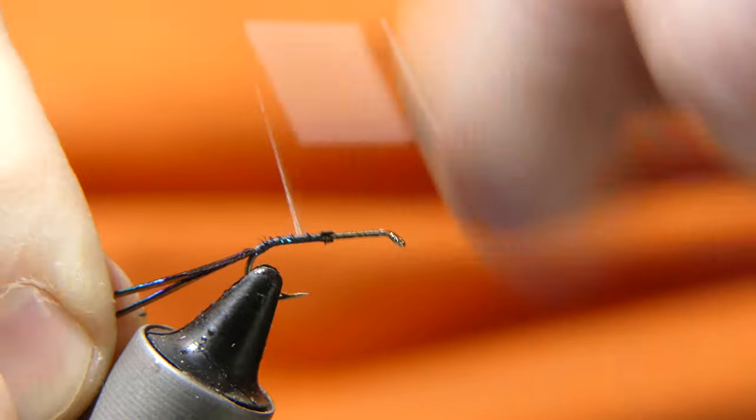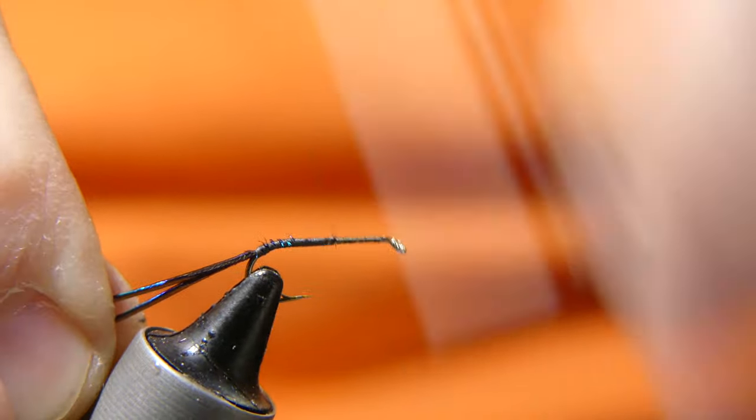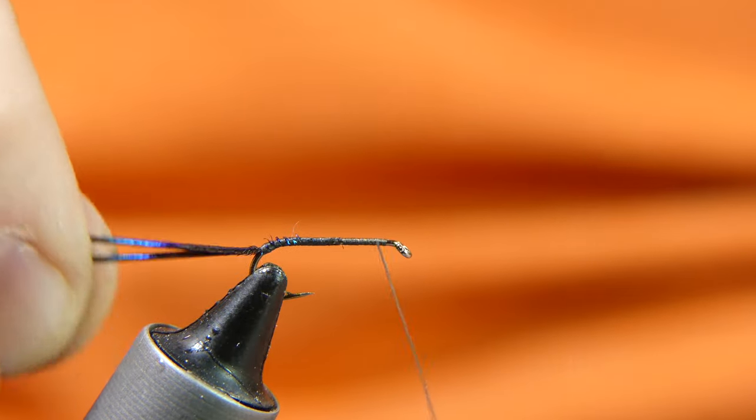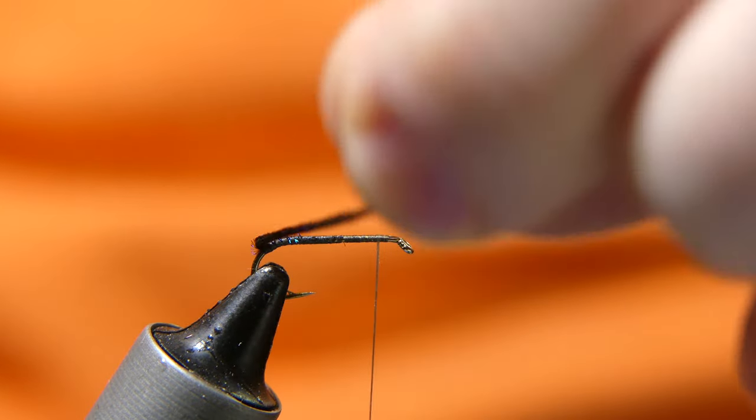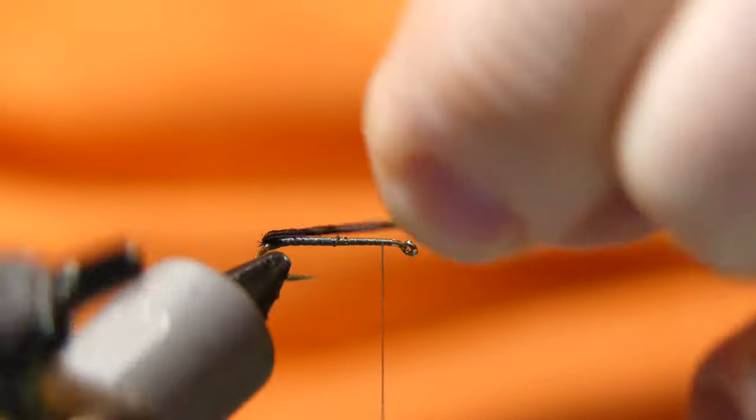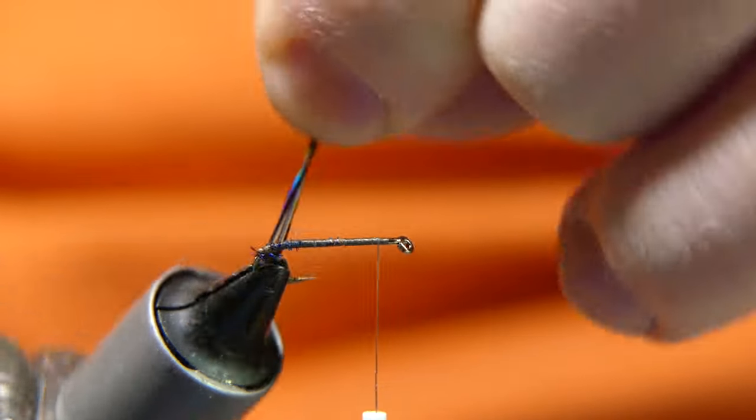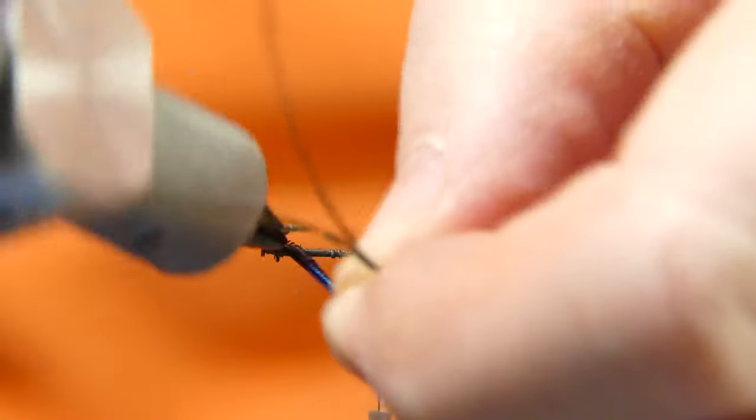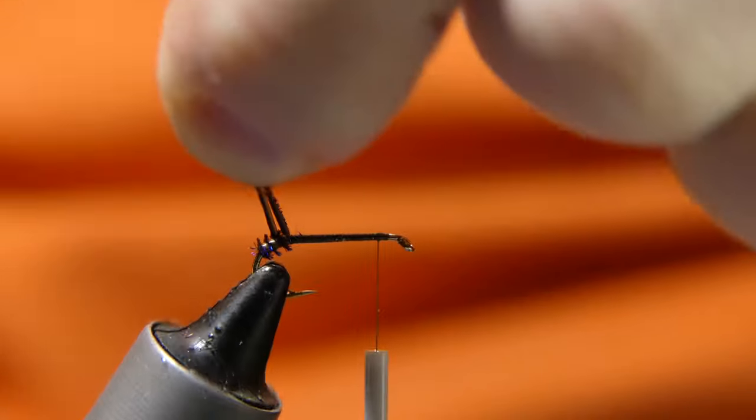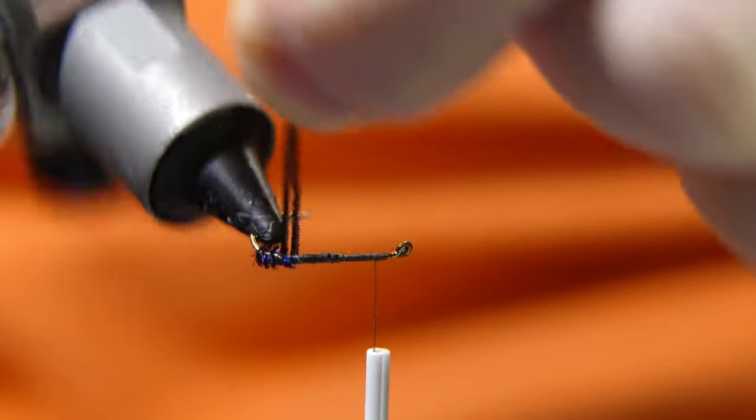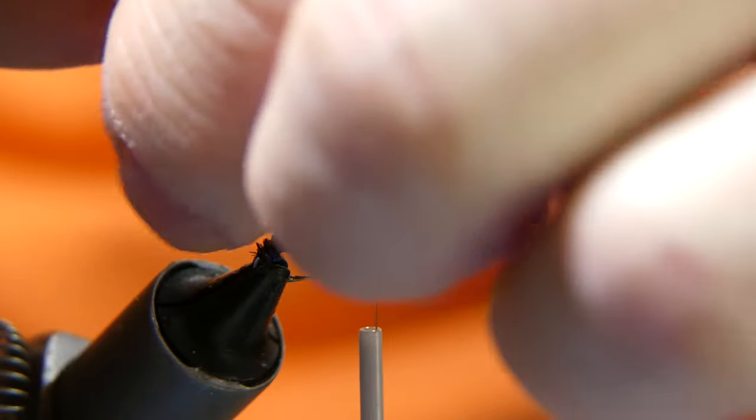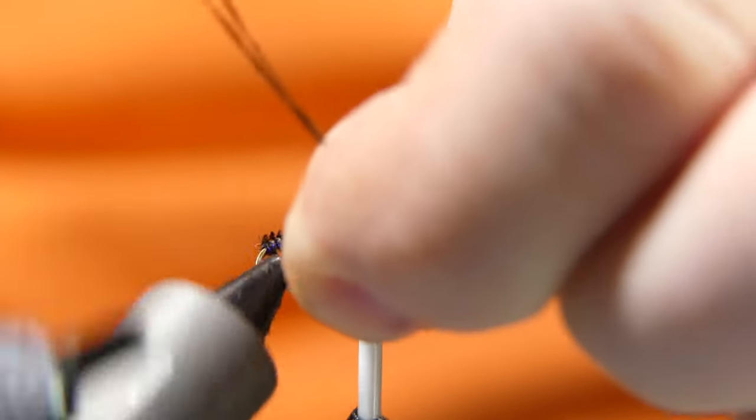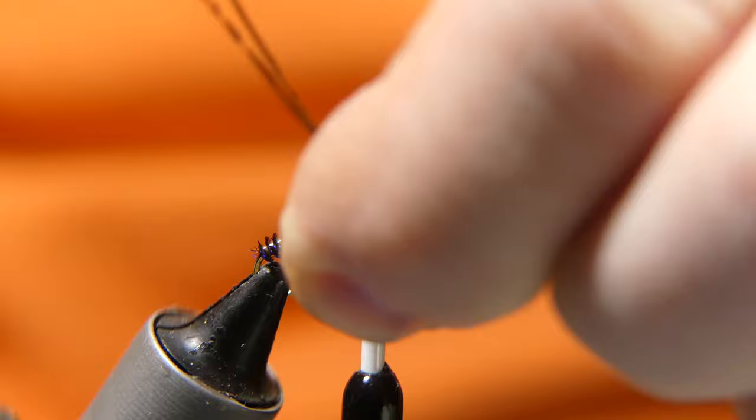Bring your thread back up to right behind the eye. Now you're going to wrap in the herl, either hand over hand or use your rotary vise. Take it all the way back up to about the three-quarter point.